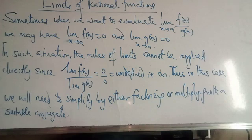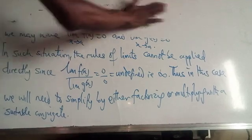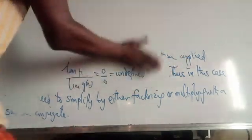I want to illustrate how this could be done with very useful examples — to show how we can solve problems that give us undefined values, so we know what to do to get them solved. The first one: evaluate the limit as x tends to 7 of x squared minus 49, all over x minus 7.